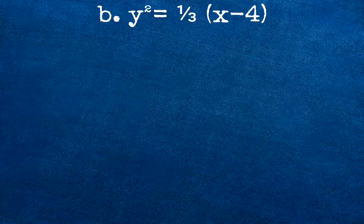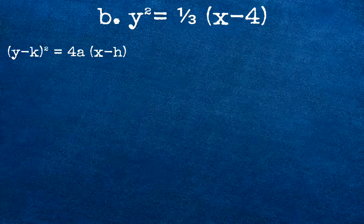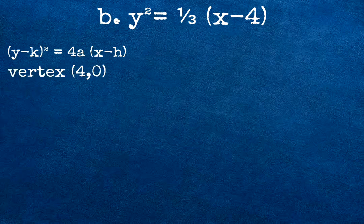For our example number 2, y squared equals 1 third times quantity x minus 4. The equation is written as quantity y minus k squared equals 4a times quantity x minus h. Our vertex will be 4 and 0.